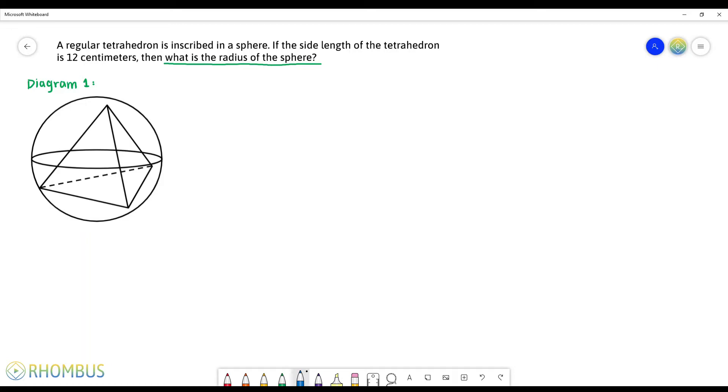Hello, welcome to my channel Rhombus. A regular tetrahedron is inscribed in a sphere. If the side length of the tetrahedron is 12 centimeters, then what is the radius of the sphere?